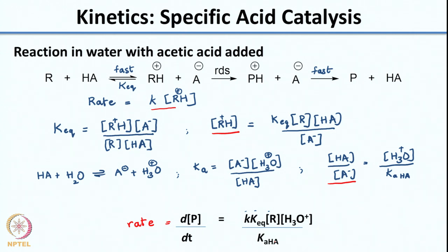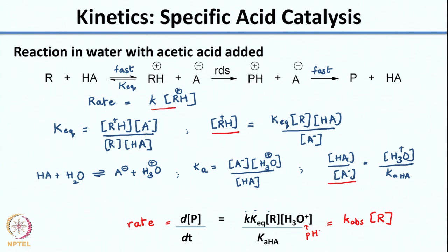What you observe here is that despite having added an external acid, it again reduces to the earlier form where you have K_observed times [R]. It essentially depends again on the pH of the reaction and the protonated form of the solvent - in this case water, so H3O+. We have mathematically derived that specific acid catalysis is seen whenever the proton transfer occurs quickly before the rate-determining step.